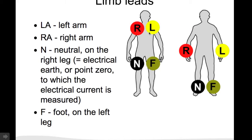You have the right and left arm, the neutral electrode on the right leg, and the foot electrode on the left leg.